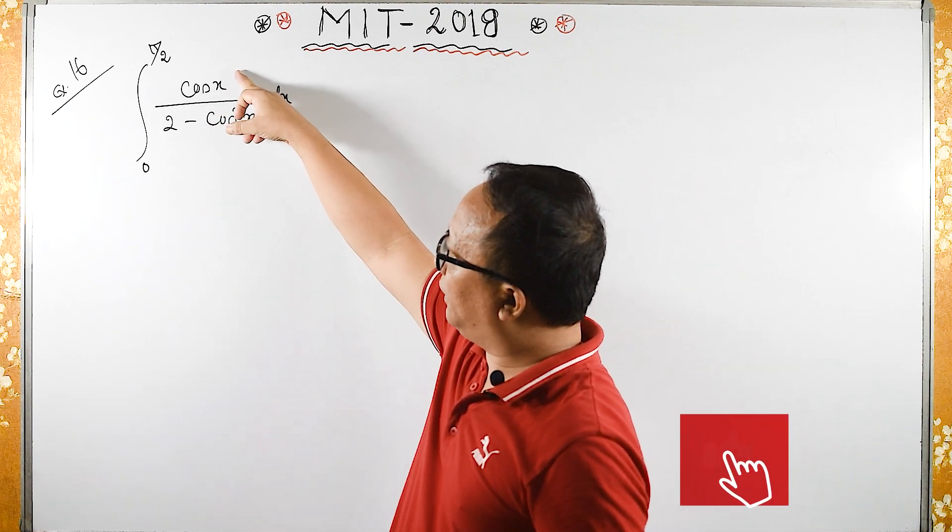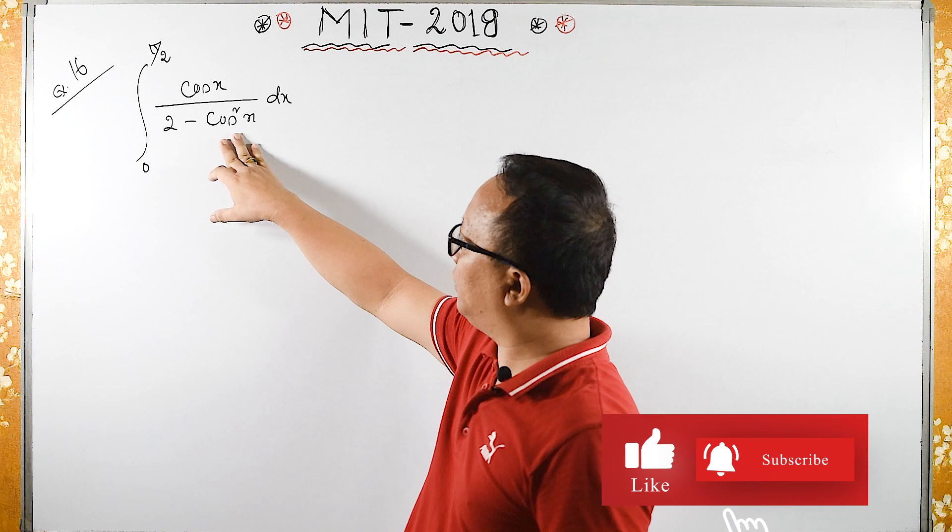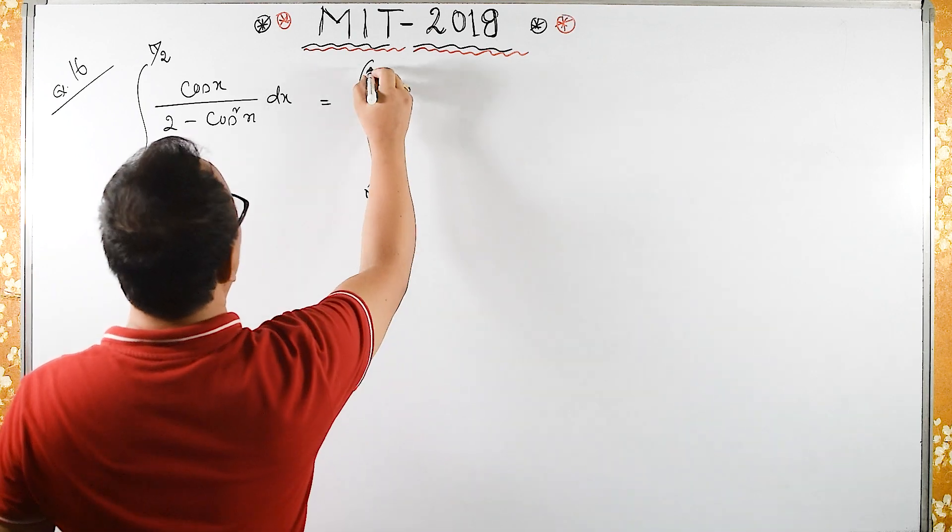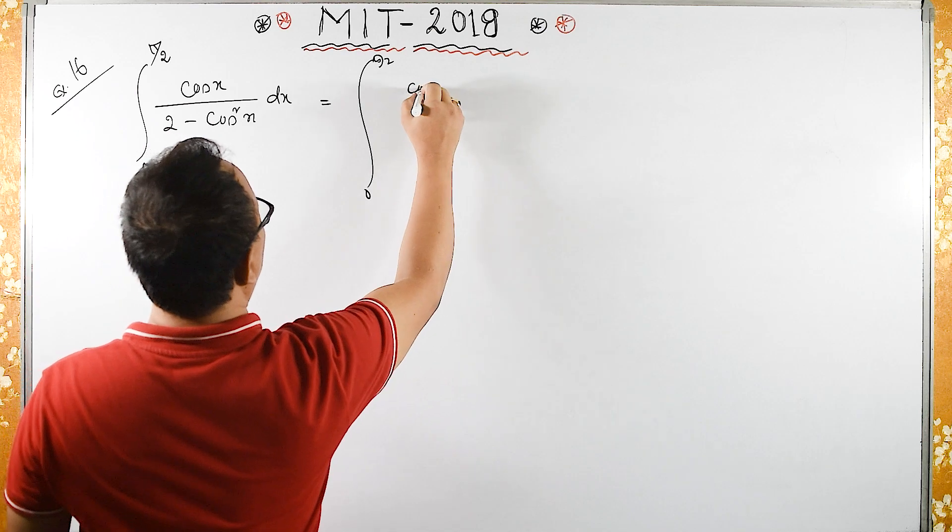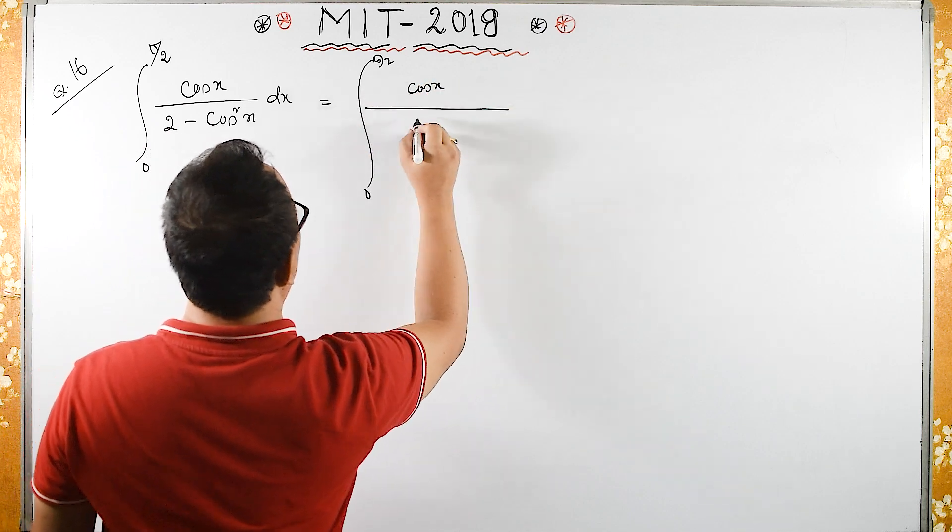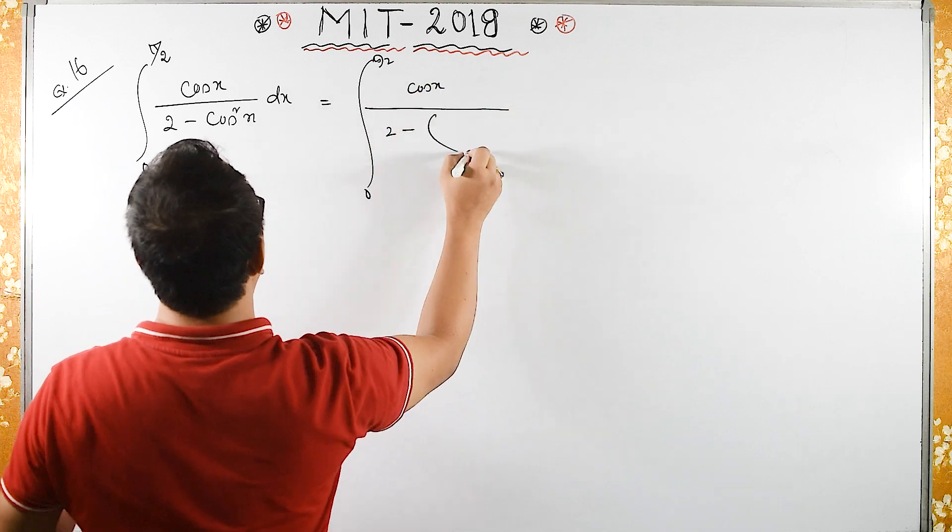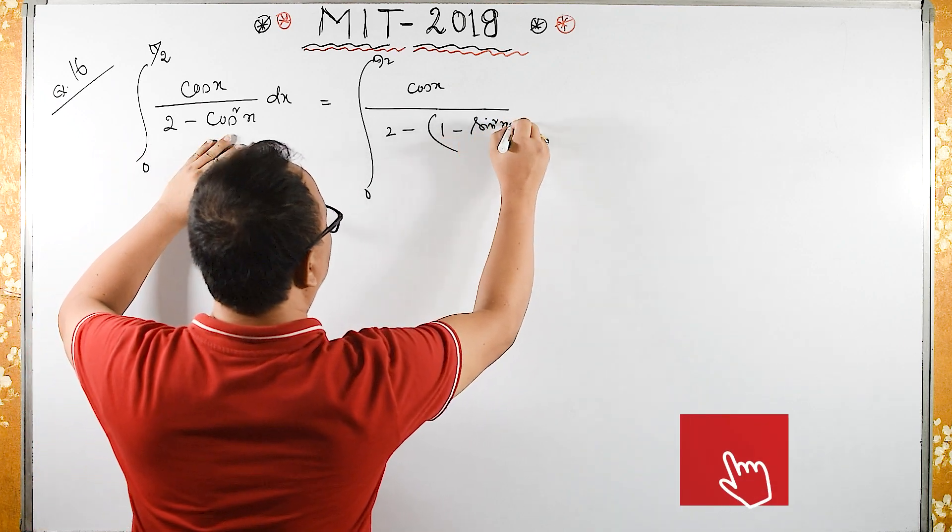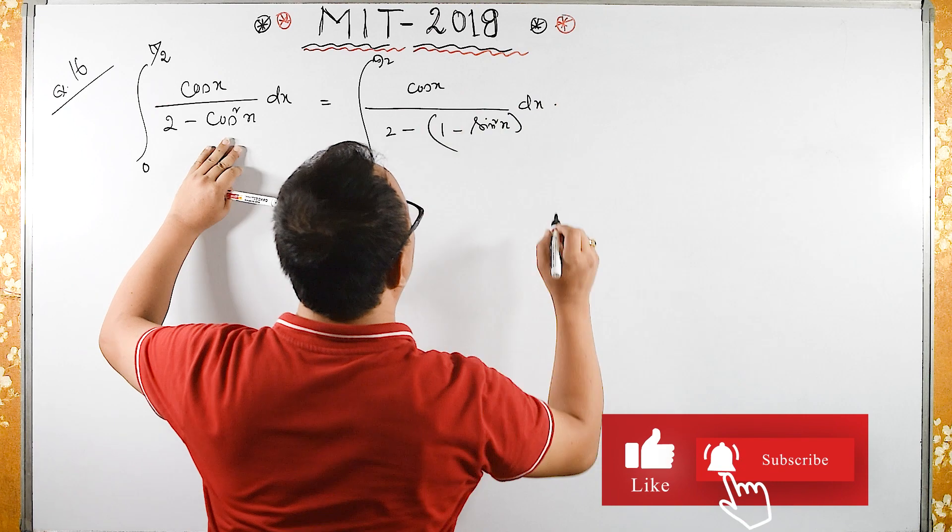We have cos x in the numerator, in the denominator we also have cos square x. The integral is 0 to pi by 2, cos of x upon 2 minus cos square, which is 1 minus sin square x, into dx.